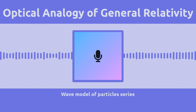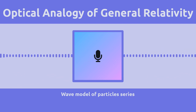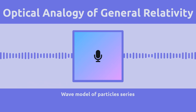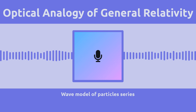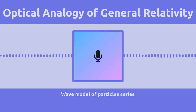All right, so get this. We're diving into a paper that explains Einstein's general relativity, but using something as simple as the way light bends through a glass of water.